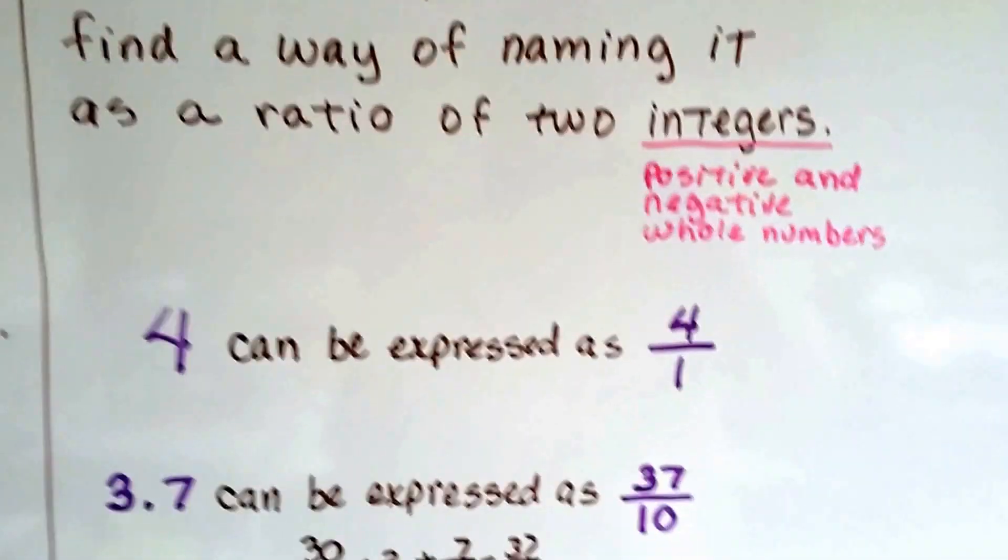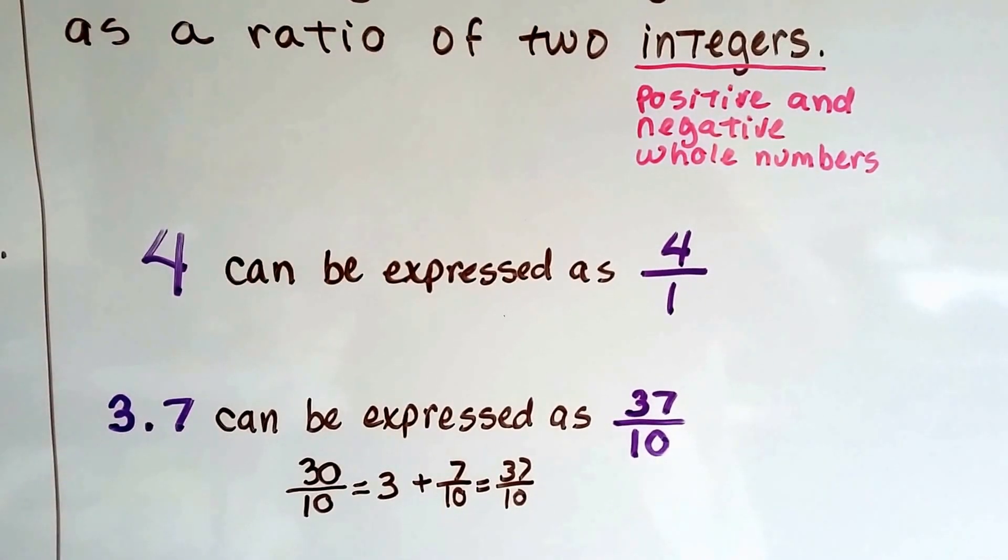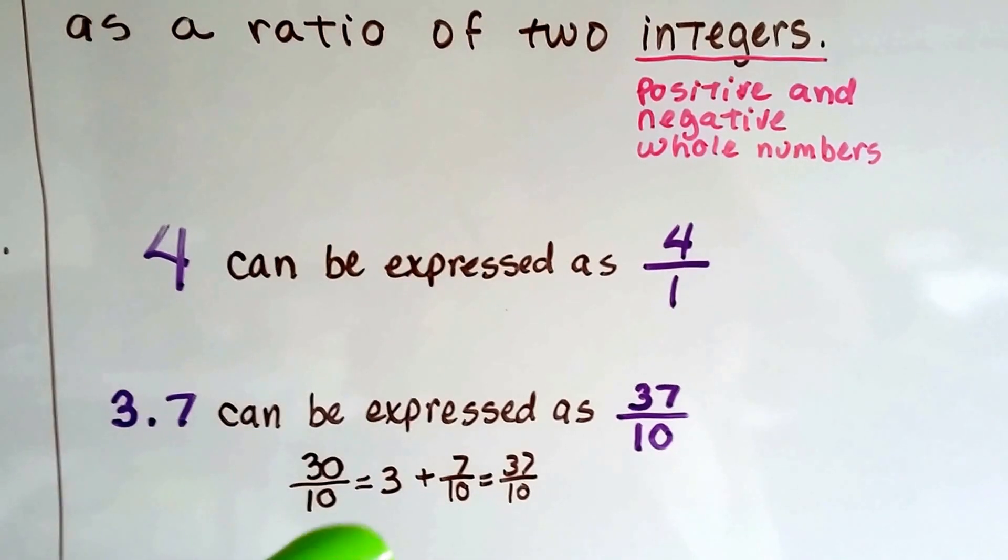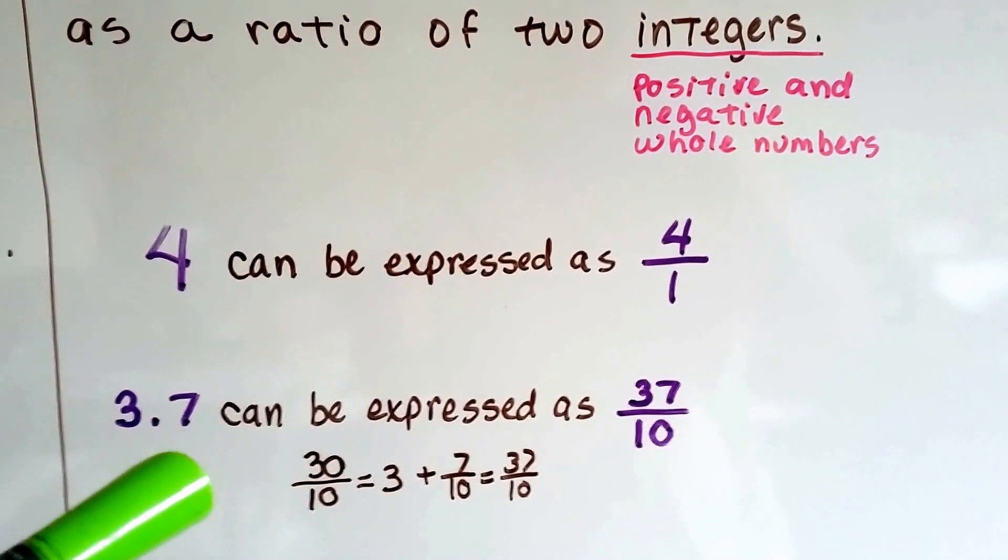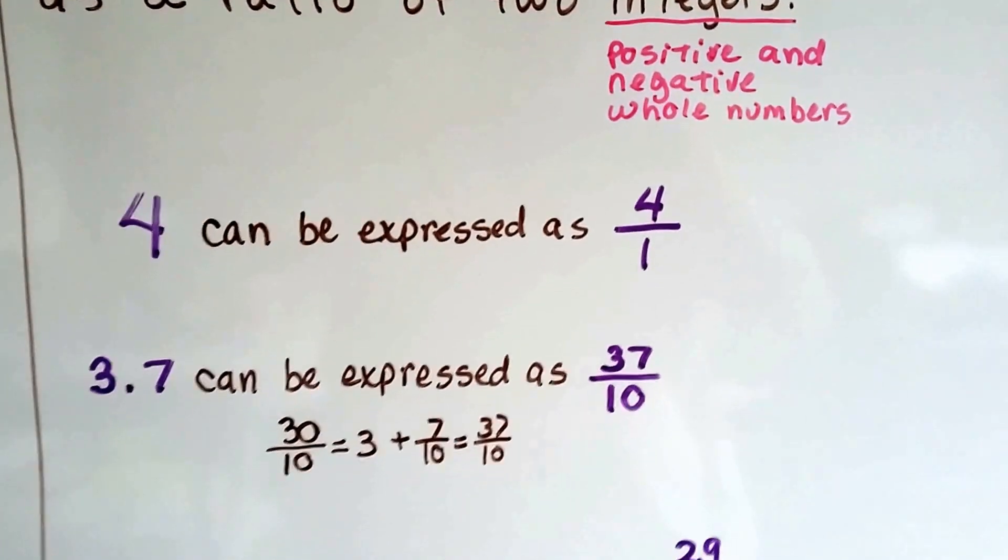That means 4. 3.7 can be expressed as 37 over 10. 30 over 10 is a 3, and we add the 7 tenths left over. That's in the tenths place. So we have 37 over 10. 37 tenths.